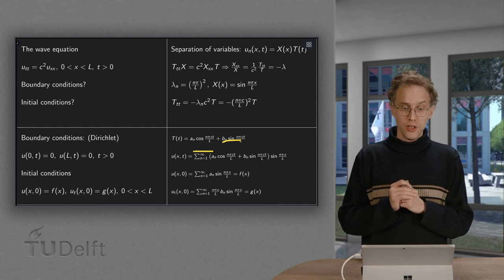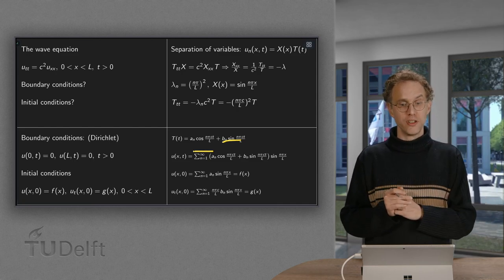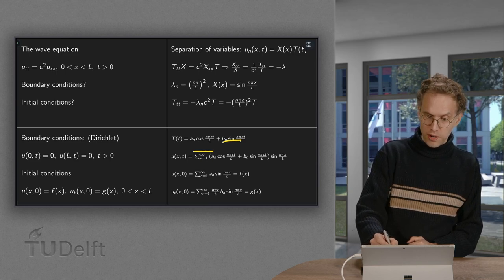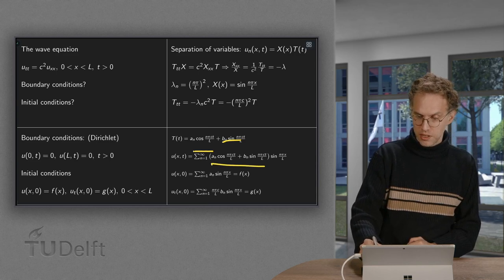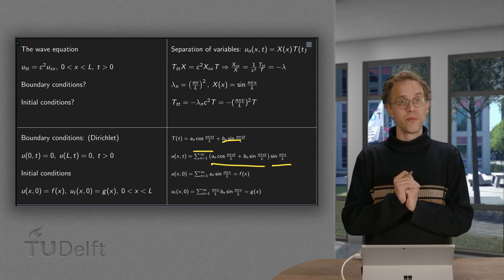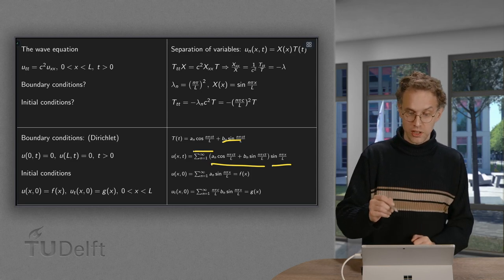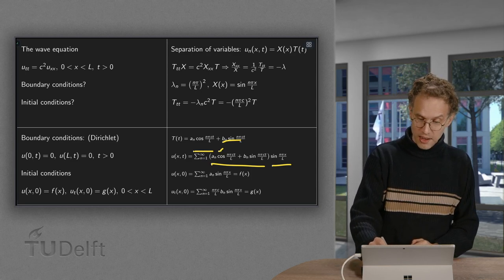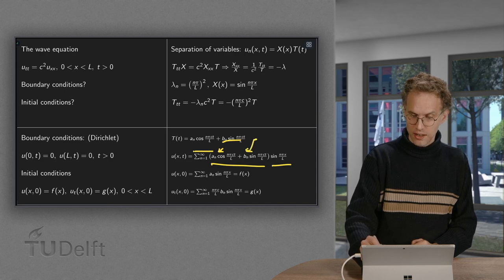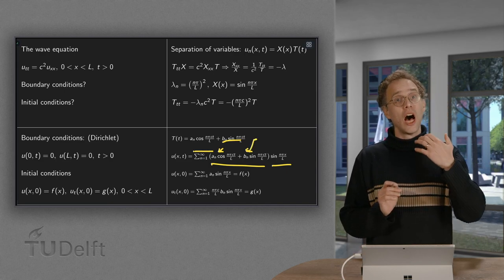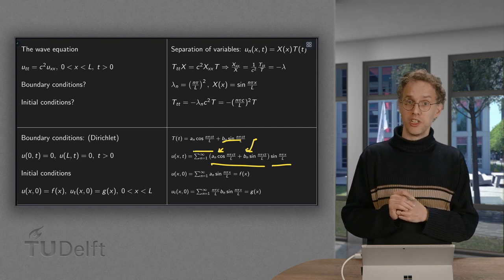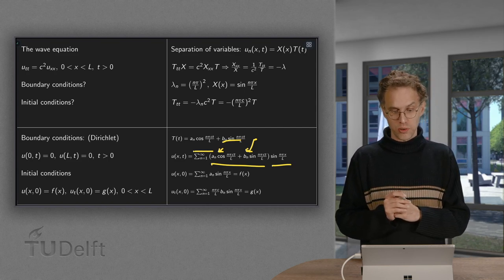So there we have our T of t. So our function u of x and t is a linear combination of the u_n's. So that is the product of the T's times the X of x's. So there we have our general solution with now constants a_n and b_n. So more constants to determine. However, we also have more initial conditions. So we can in fact determine those constants.